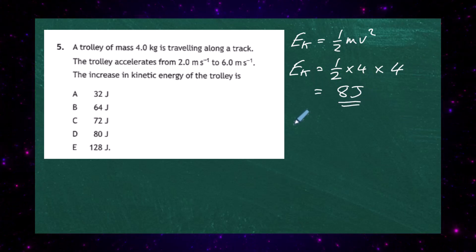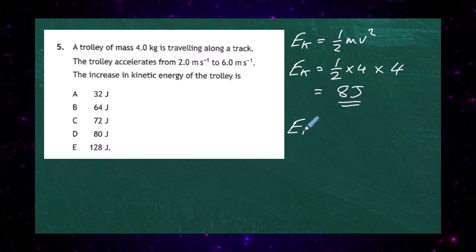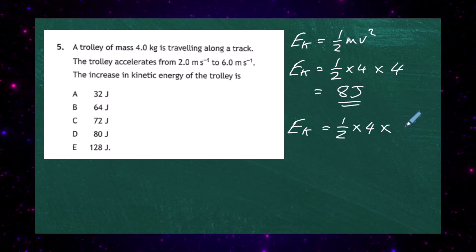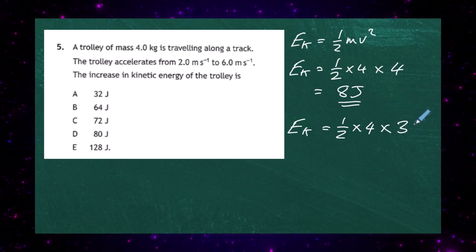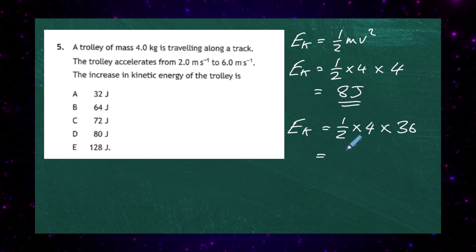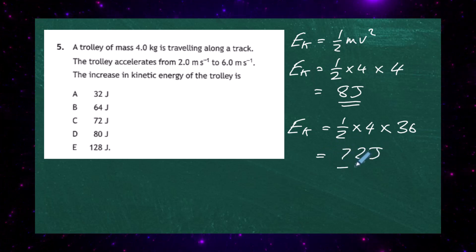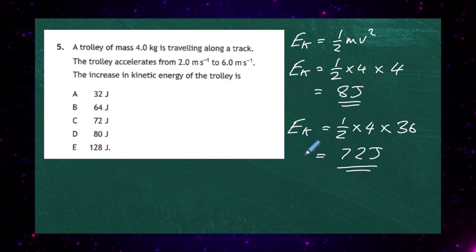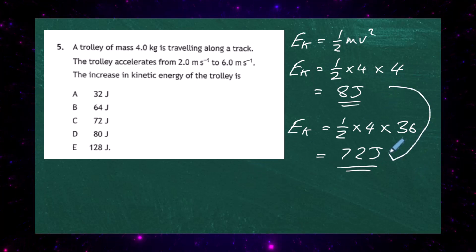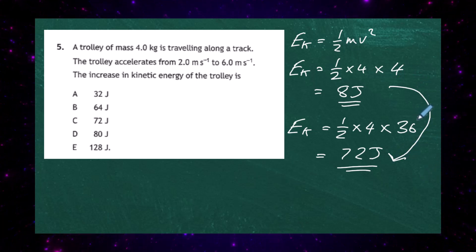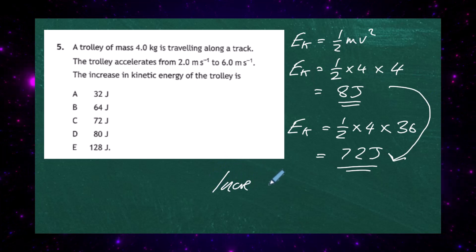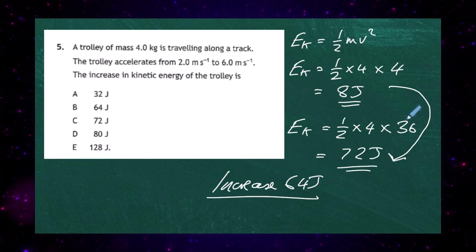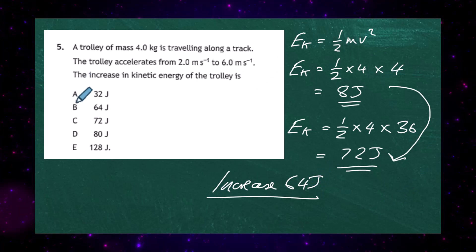At six metres per second: EK = ½ × 4 × 6² = ½ × 4 × 36 = 72 joules. The increase in kinetic energy is 72 − 8 = 64 joules. The correct response for question five is B.